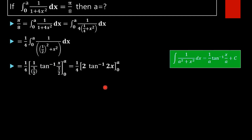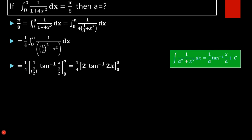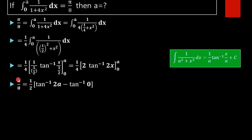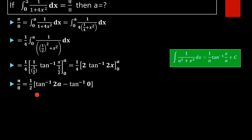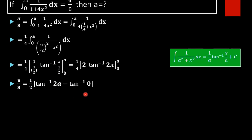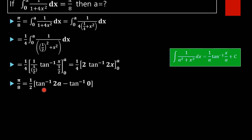Now we apply the limits — upper limit a and lower limit 0. Since this integral equals π/8, we have π/8 = (1/2)(tan⁻¹(2a) − tan⁻¹(0)). The 2 and 4 cancel to give 1/2, and tan⁻¹(0) = 0.